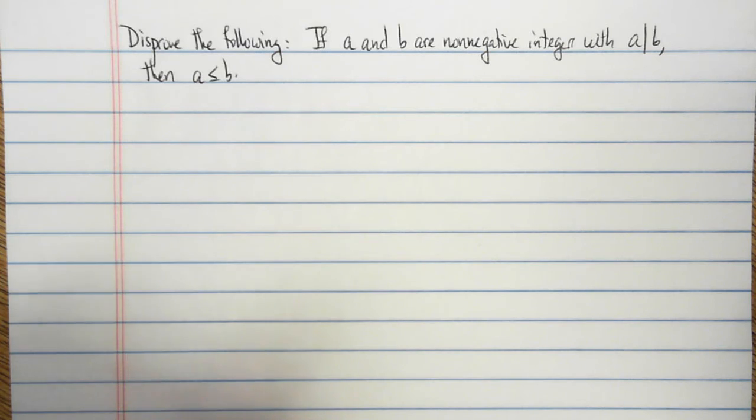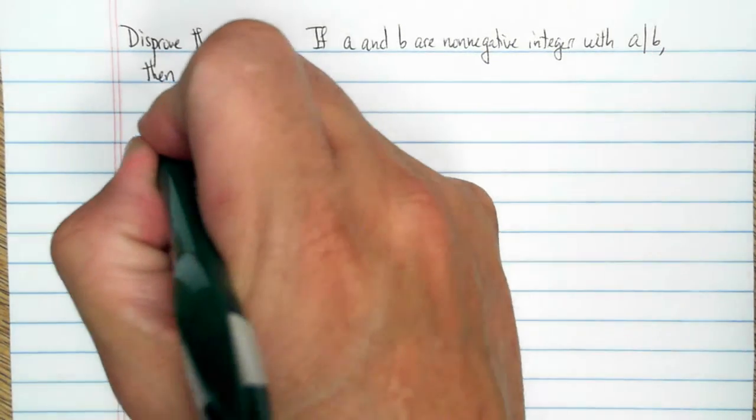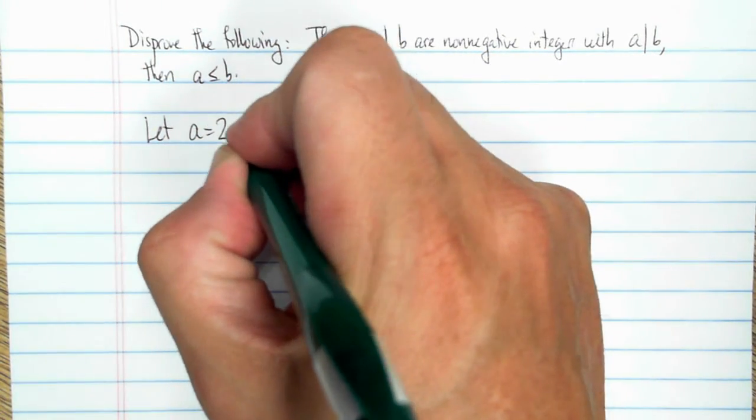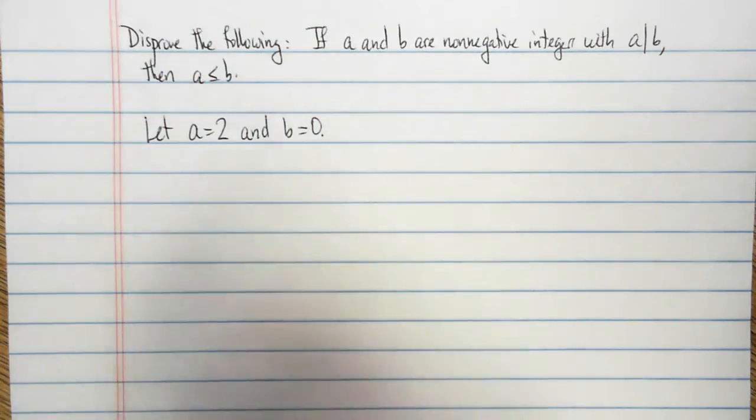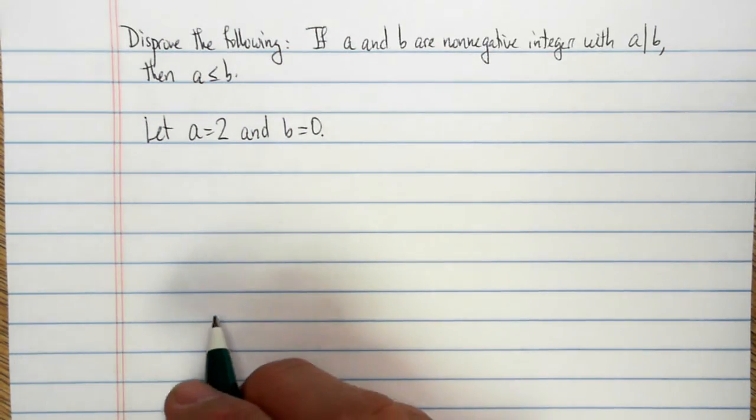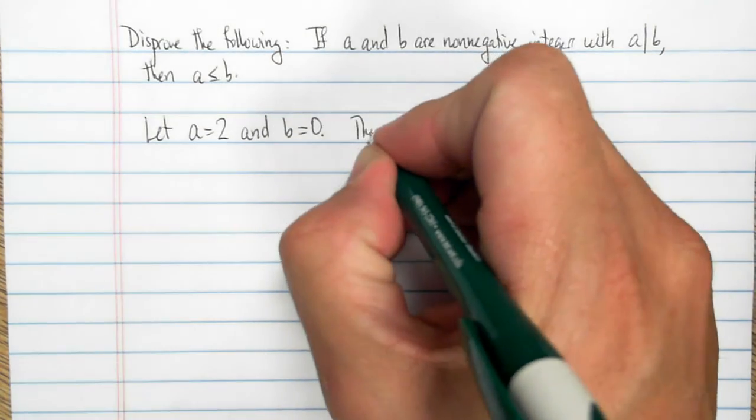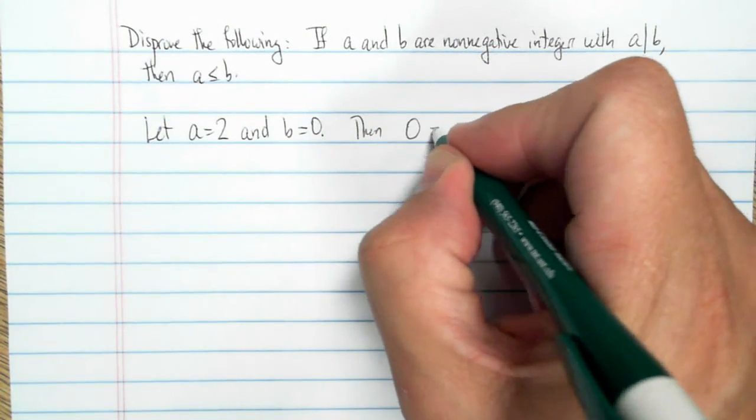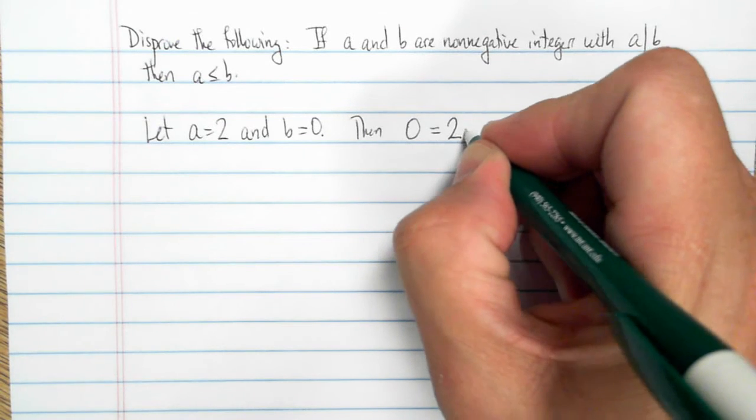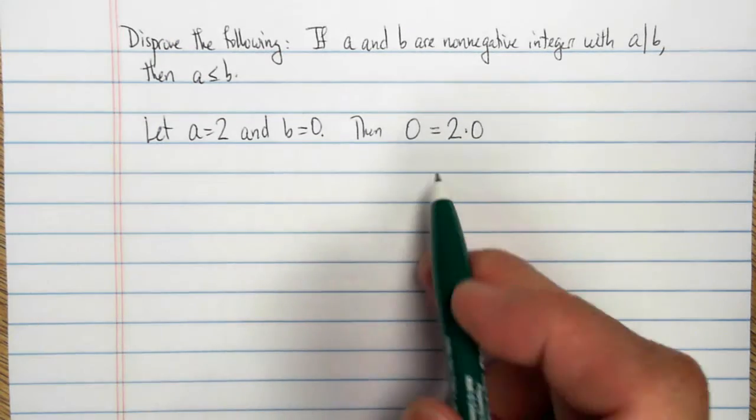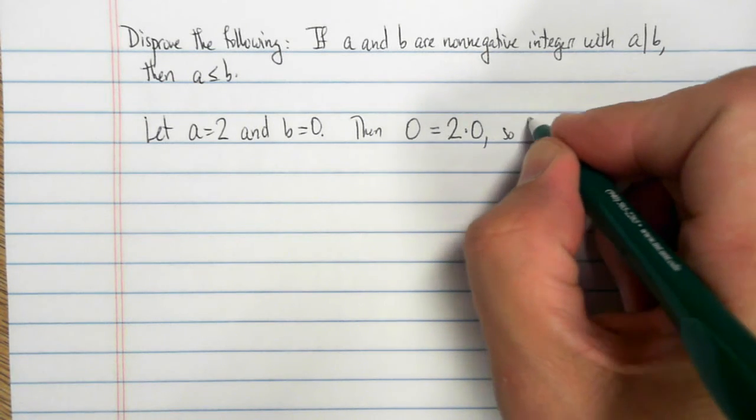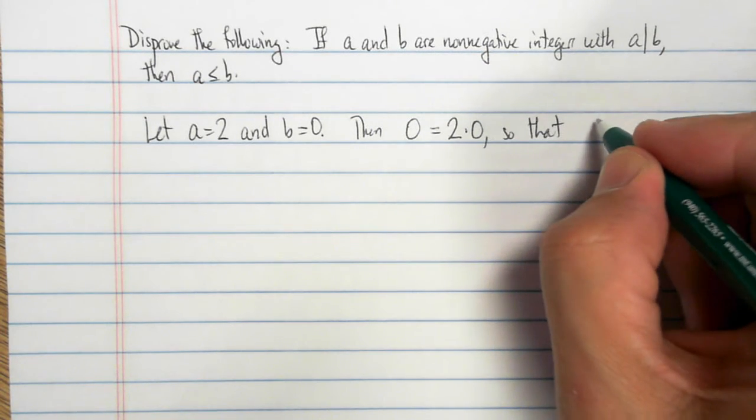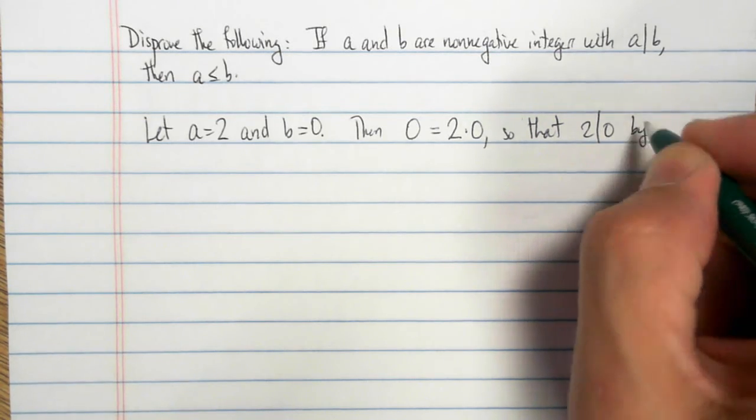However, there's one important special case. Let A be equal to 2, that's the number for A is not so important, but B can be equal to 0. 0 is not negative. Then B is equal to A times an integer. There's my B, that's equal to A times an integer.